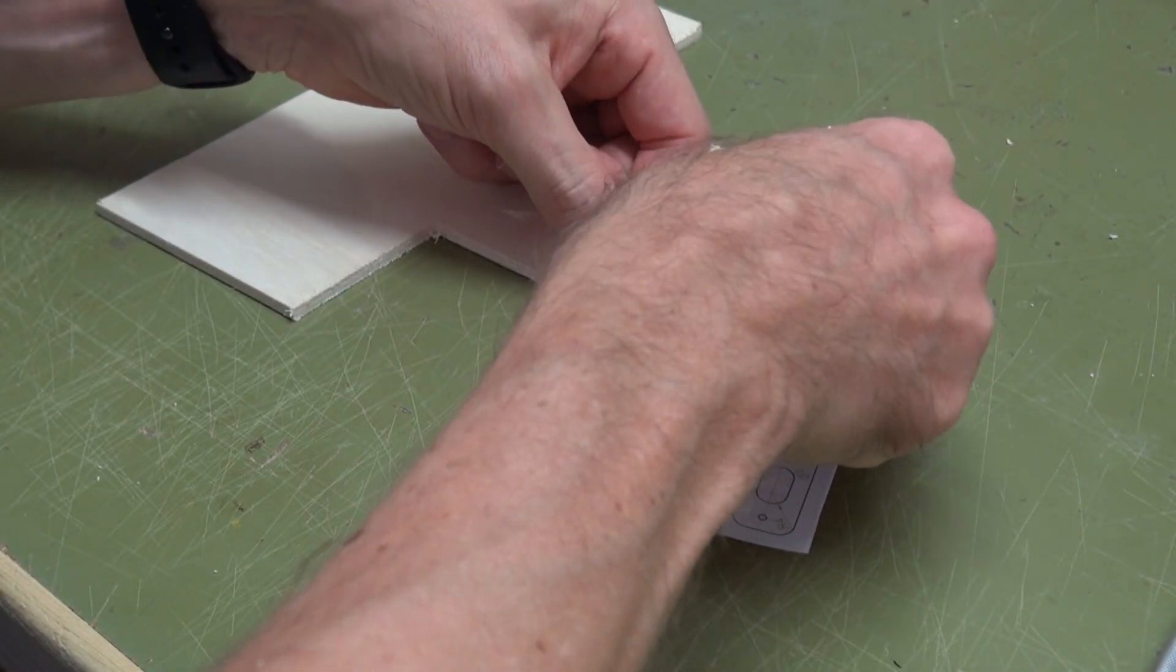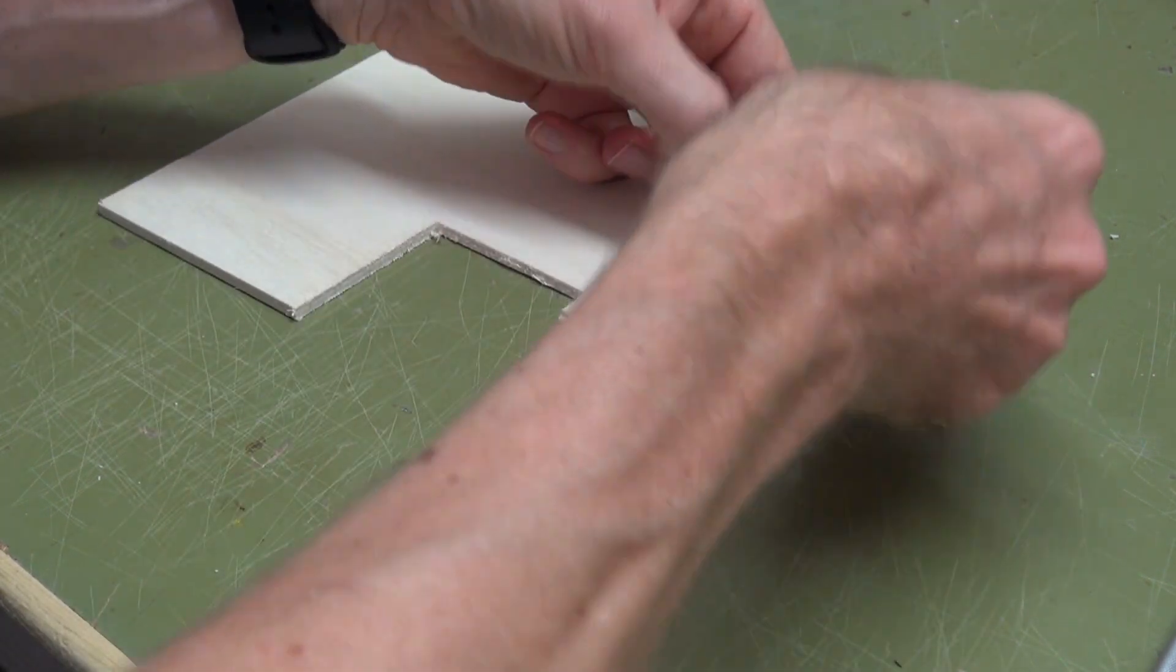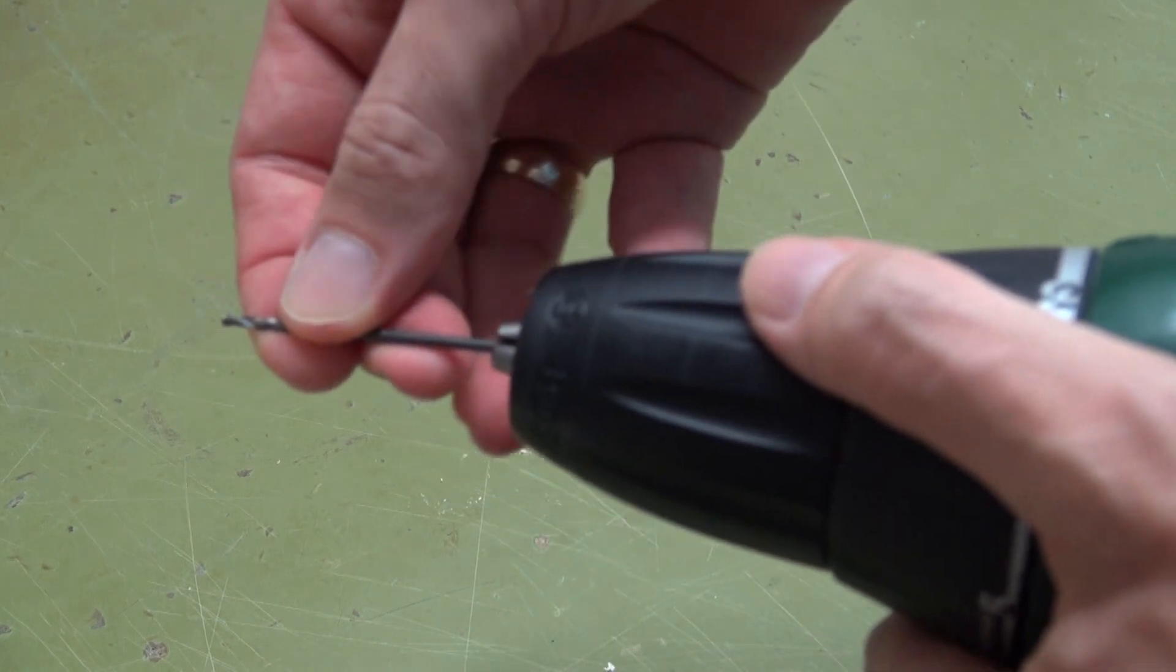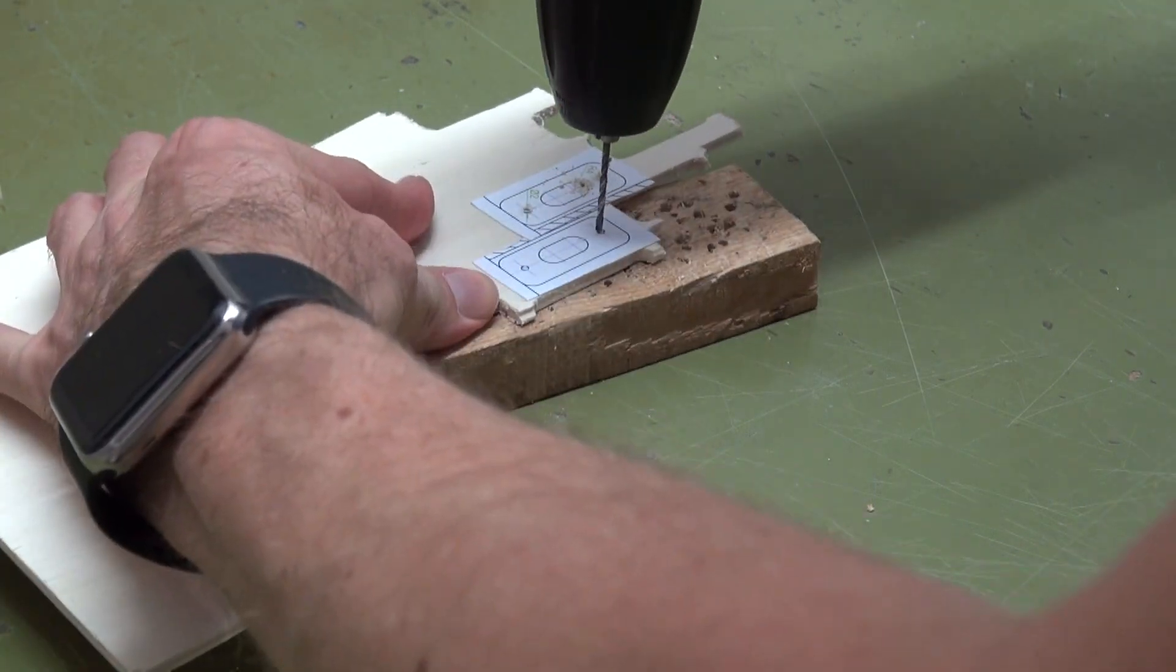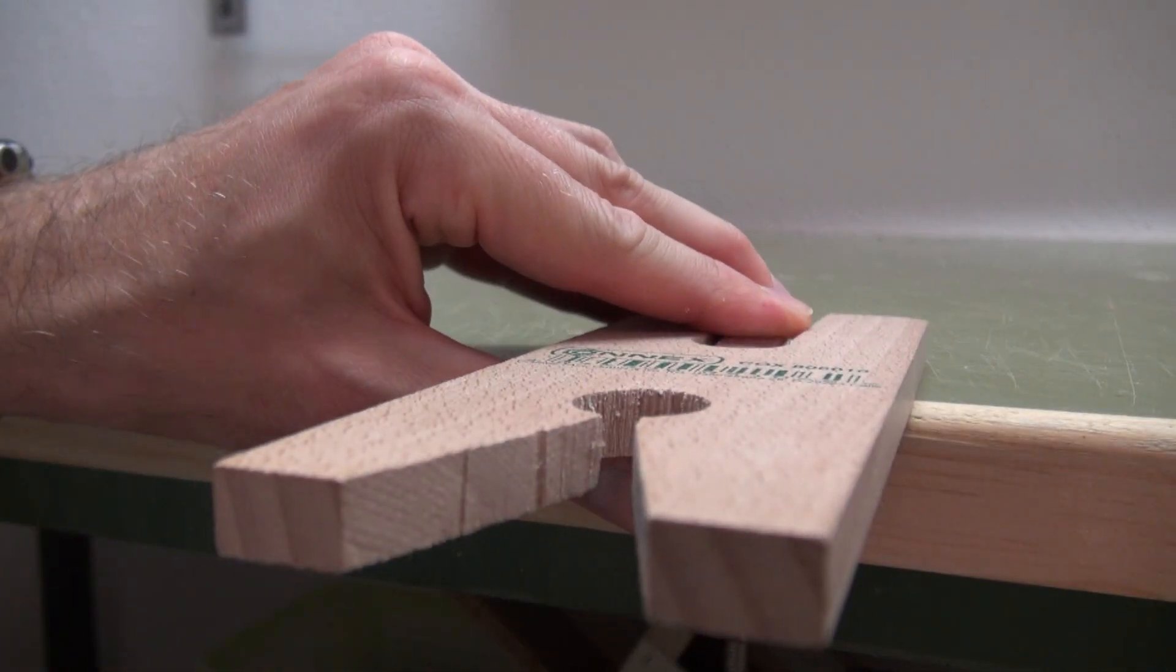First, let's cut out the two parts for the mounting base. Attach the plan to the 3.5 millimeter plywood. Now it's time for the jigsaw.